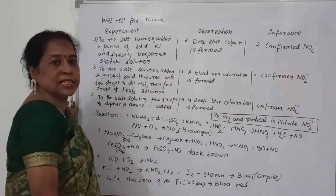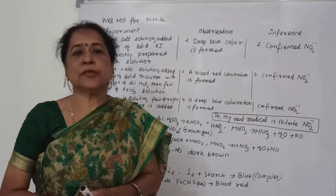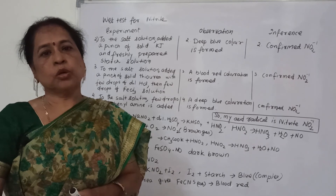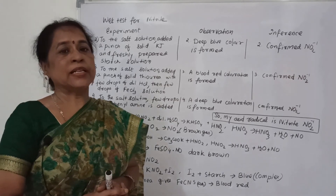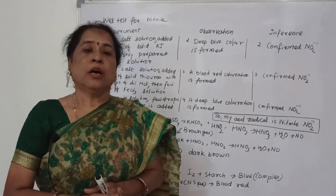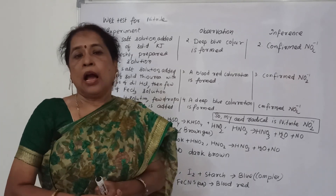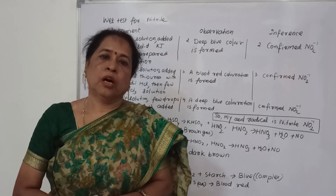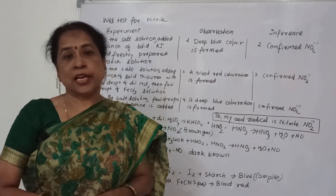I hope it is clear. If the unknown acid radical is nitrite, this type of reaction should be carried out, and one should write that the acid radical is nitrite. One request to all students of 11th and 12th science: please follow the instructions and guidelines of your chemistry teacher, and according to the availability of your chemistry lab and reagents, do the experiments and observe the inference.